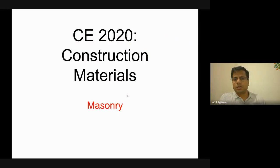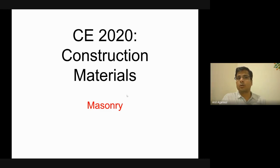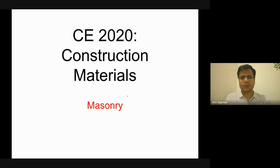This is the course PE2020 Construction Materials. There are three parts to this course. This course used to be a total three-credit course. The first part was concrete technology, the second part was steel, the third part was masonry, and the fourth part was composites. Later it was split into two: concrete technology became a separate course, and the second, third, and fourth parts were joined together to make this construction materials course. The sub-parts are steel, masonry, and composites.